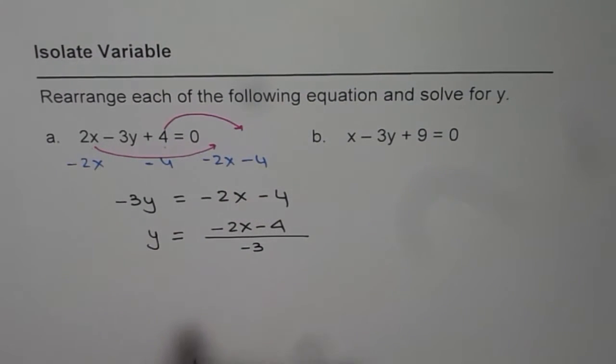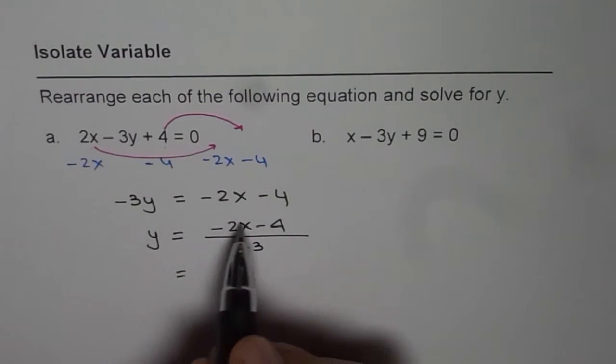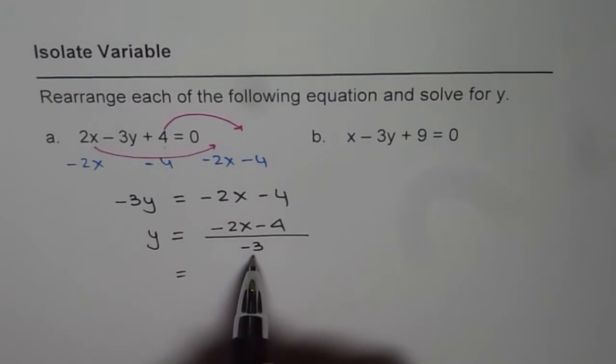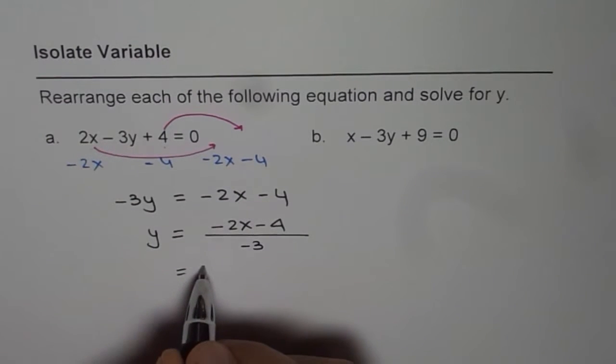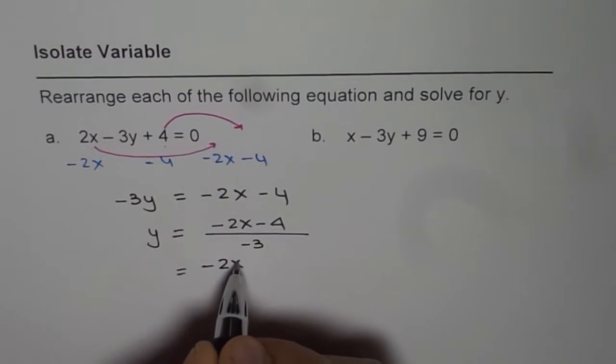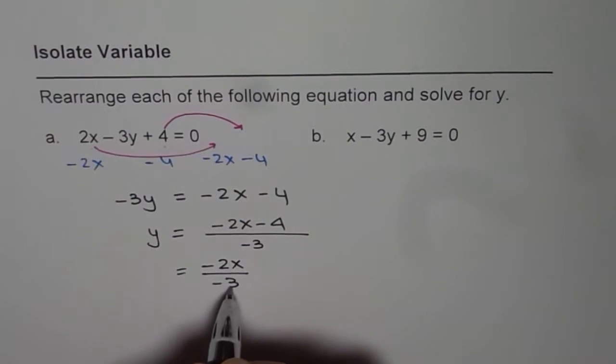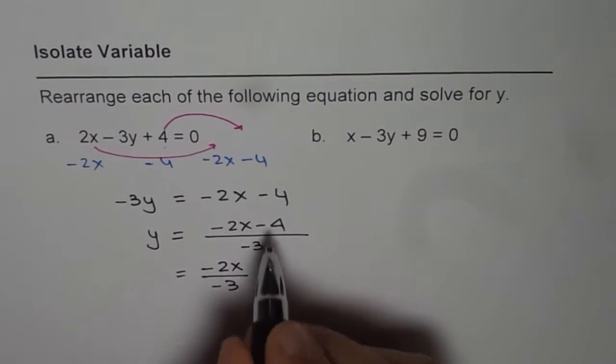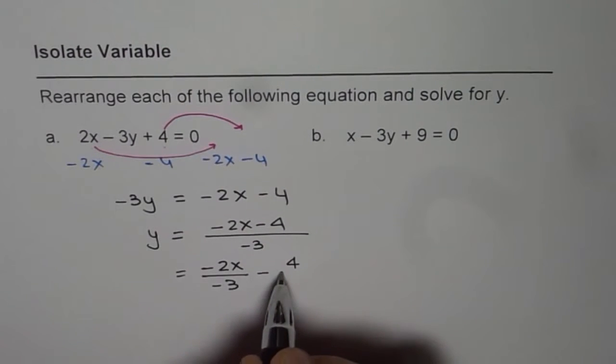Now let's understand this part. When we say minus 2x minus 4 divided by minus 3, then minus 3 is dividing into both the terms. Look at it like this, minus 2x divided by minus 3, and then we have minus, and I am writing 4 on top, divide by minus 3.